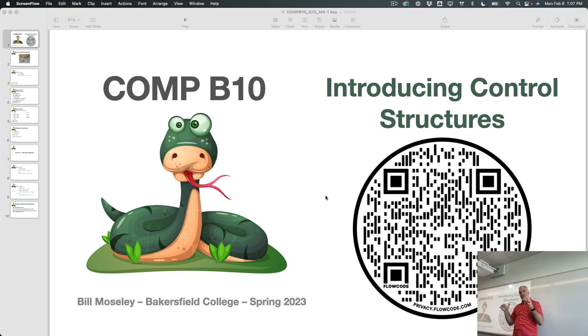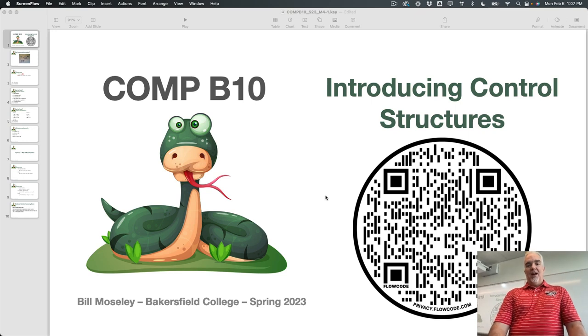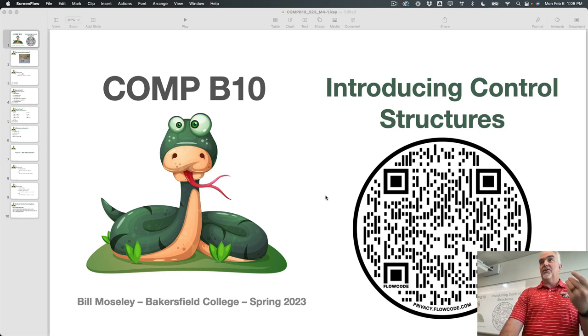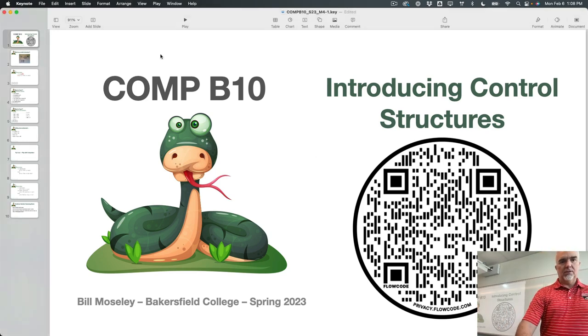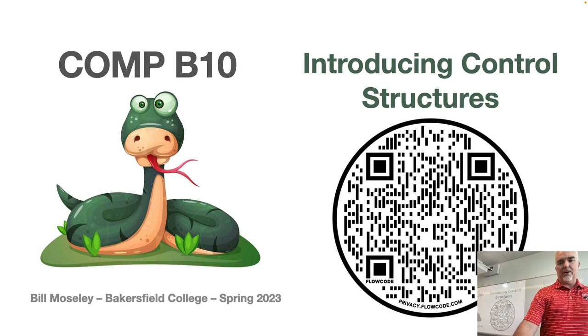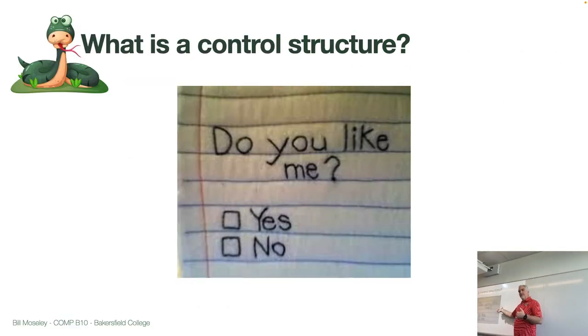But control structures, very cool, gives us a lot of complexity in our programs, and gives us the ability to do a lot of stuff. At their core, they're pretty simple. Let me show you an example of a classic control structure that I hope you'll recognize. This one familiar to everybody? Sort of a classic. It's a control structure.